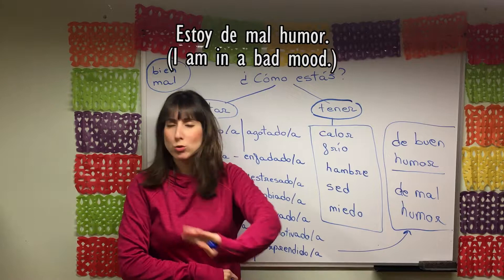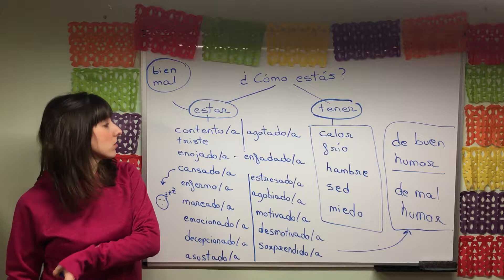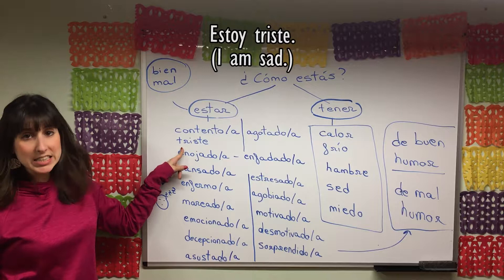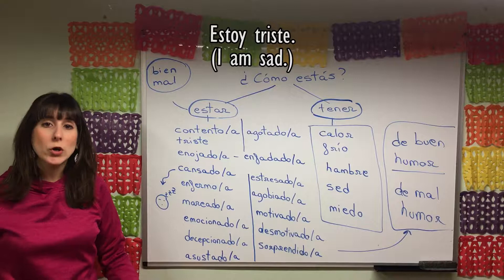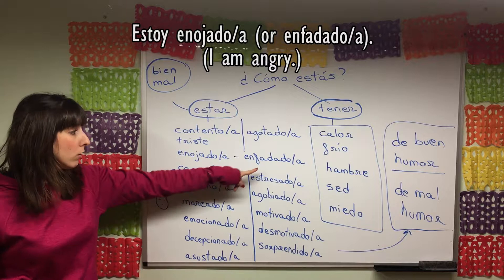Estoy de buen humor, estoy de mal humor. So contenta means happy. Then we also have triste, which means sad — the ending stays the same for both male and female. If you want to say I'm sad: estoy triste. Then we also have enojado.